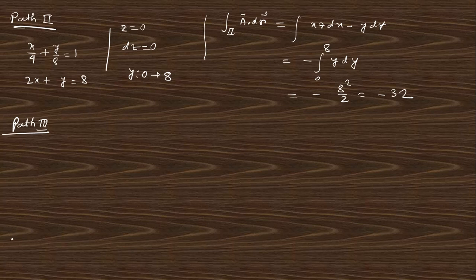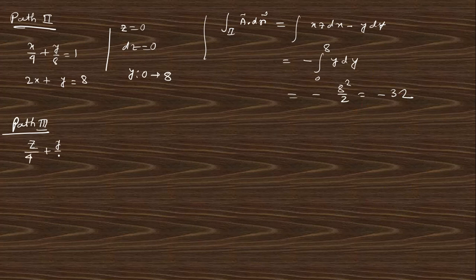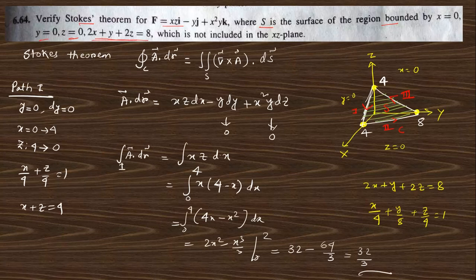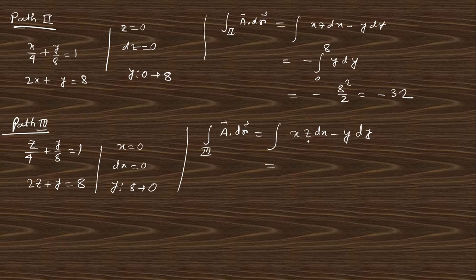For path 3, the equation is 2z + y = 8 and x=0, so dx=0. y changes from 8 to 0. The integral reduces to −y dy with x=0, giving −∫₈⁰ y dy = +[y²/2]₀⁸ = +32. The integral along path 3 is +32.